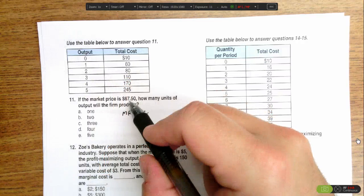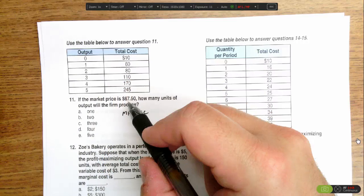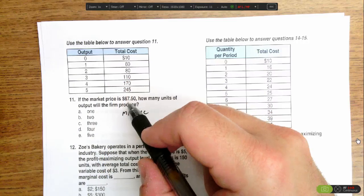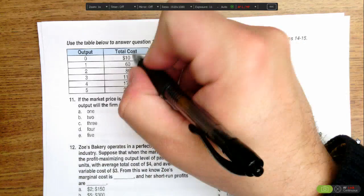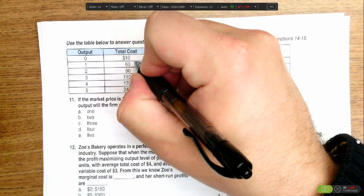In this case, marginal revenue is $67.50 because that's the price of the good and it's not going to change. So we just need to calculate our marginal cost, which is just the change in total cost with one more unit of output.